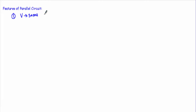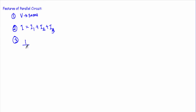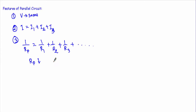Now let me point out some features of a parallel circuit. First: the voltage across each resistor is the same. Second: the total current equals the sum of the individual currents through each branch, I = I1 + I2 + I3. Third: as the number of parallel branches increases, the total resistance of the circuit decreases, since 1/Rp = 1/R1 + 1/R2 + 1/R3 — adding more resistances makes Rp smaller.